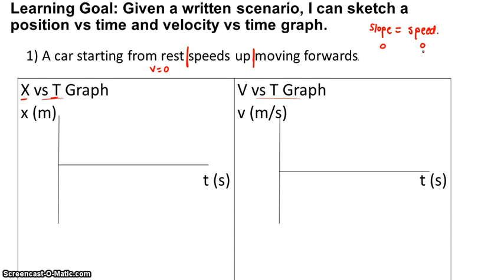Right at the beginning, when it's at rest, its slope has to be zero. So what does a zero slope look like? We've got positive slope, zero slope, or negative slope. So at the beginning, our slope is zero.